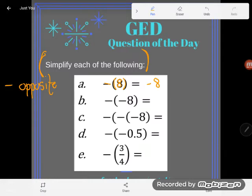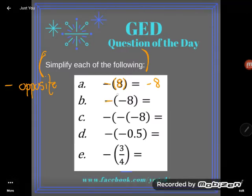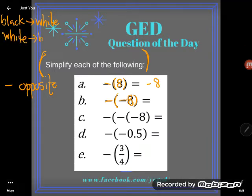So let's take a look at B then. A lot of students will freak out, but look at what this one says - this one says the opposite of negative 8. Well let's think about that. We know that the opposite of black is white, but you can also turn that around and go the other direction. If the opposite of black is white, then the opposite of white is black.